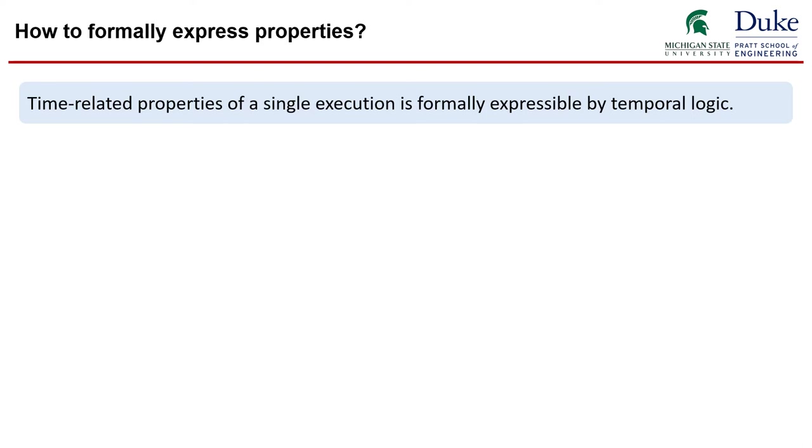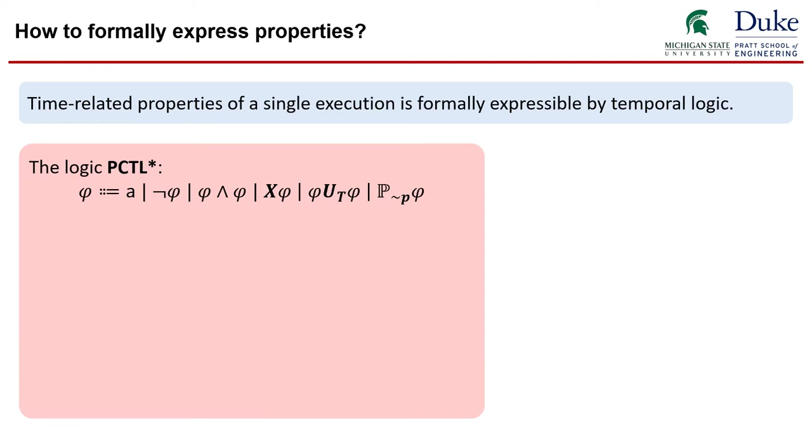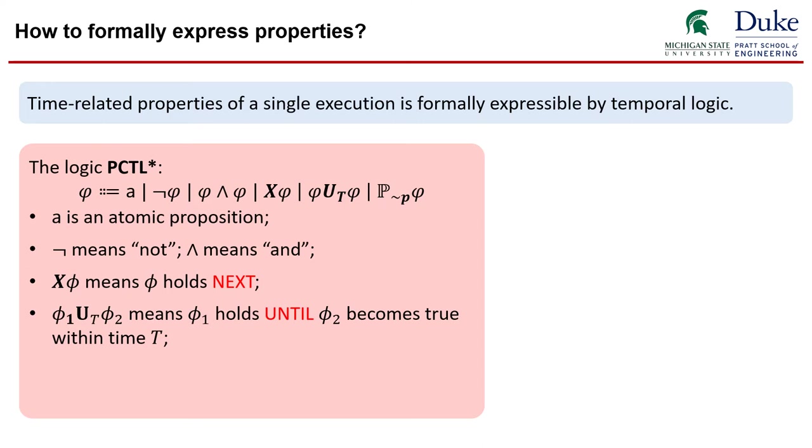When it comes to formally expressed properties, generally time-related properties of a single system execution should be formally expressed by temporal logic. For probabilistic systems, the common logic is called PCTL star. It is a language that is composed of the following syntactic rules. It has a set of atomic propositions capturing some basic facts. And it also has propositional logic connectives such as not and and or. Also, it has two temporal connectives that can reason about properties about time. The next operator means something should happen at the next time instance. And the until operator says that something should hold until another thing becomes true. And these changes should happen within the given time bound t.